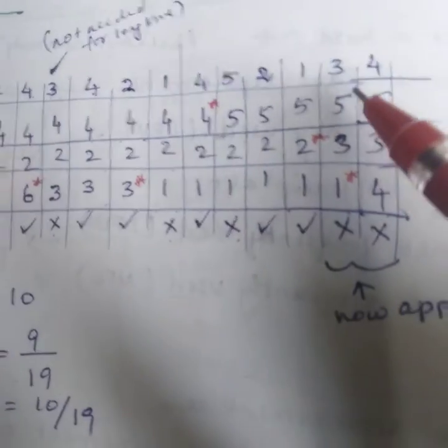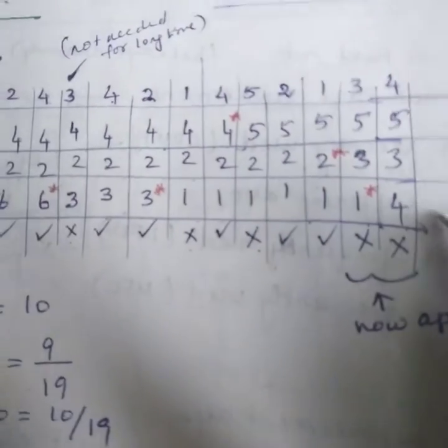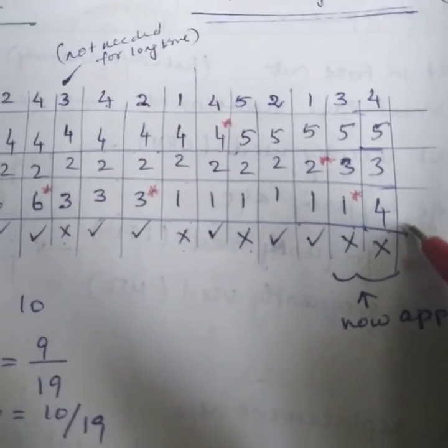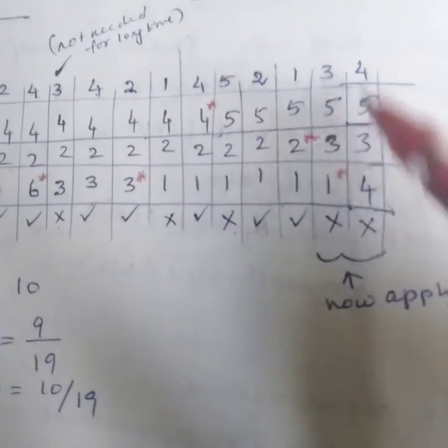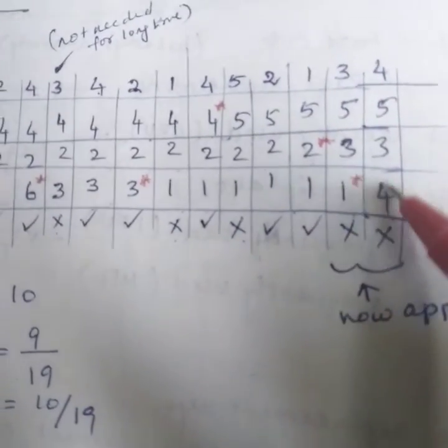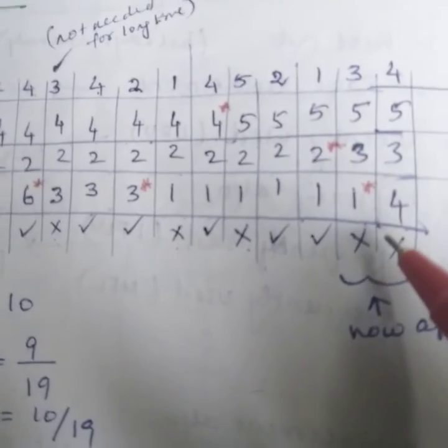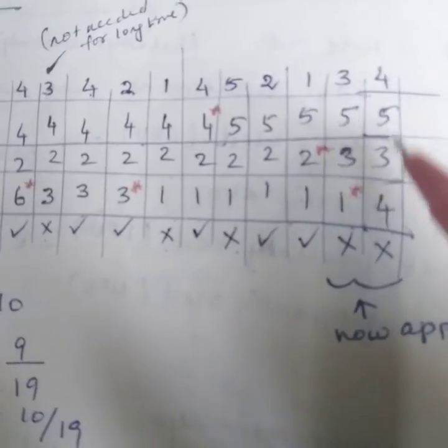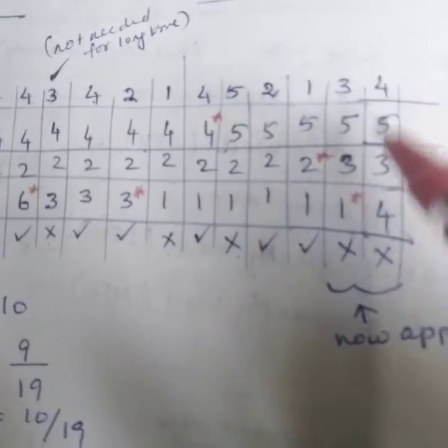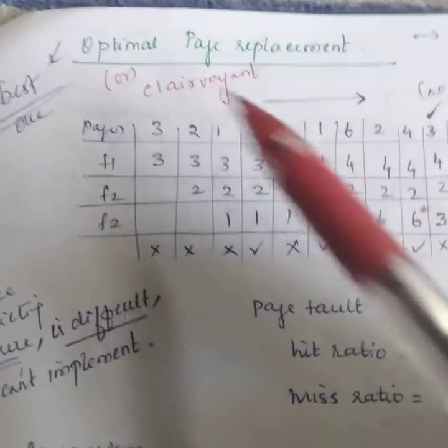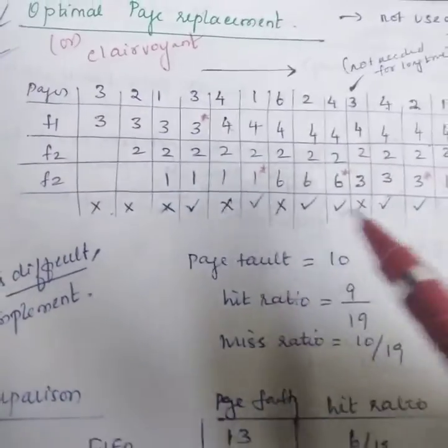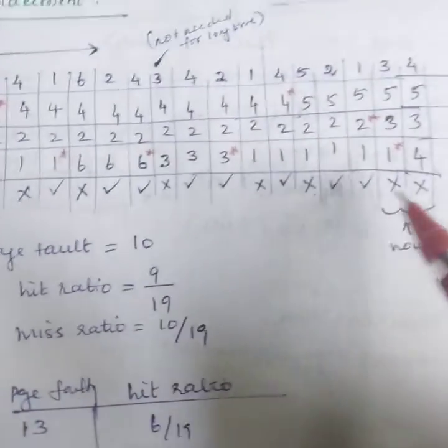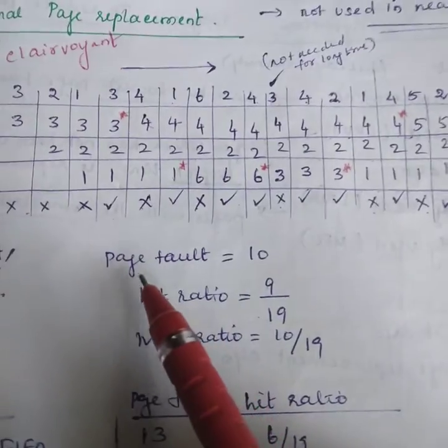So here in this area you can replace in FIFO order. You can use first in first out, so you can replace any string in FIFO order because there is no any string further. This is the concept of optimal page replacement algorithm.